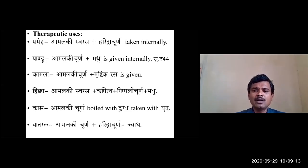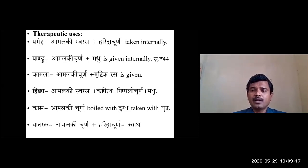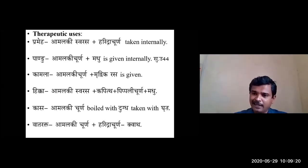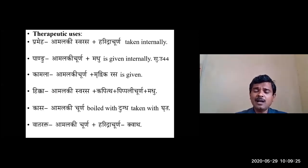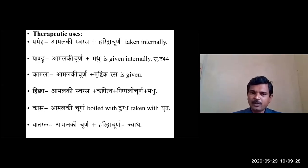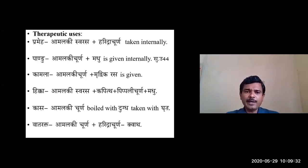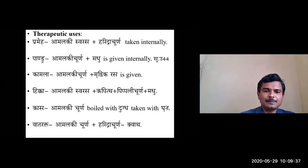For prameha - the primary indication to remember, as both Vagbhata and Sushruta state Haridra and Amalaki are best pramehaghnadravyas. The main therapeutic indications are: prameha, pandu, kamala, hikka, kasa, and vatarakta.